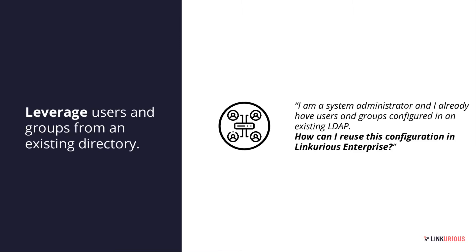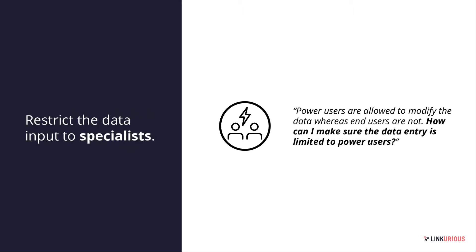Second example: a system administrator team working at a bank supporting the fraud department. As technical experts, one of their roles is to grant user access to Linkurious Enterprise. But they already have users and groups defined in another system such as LDAP. How can they leverage that configuration and avoid doing the same configuration twice? That's another example of what we can do with Linkurious Enterprise access rights.